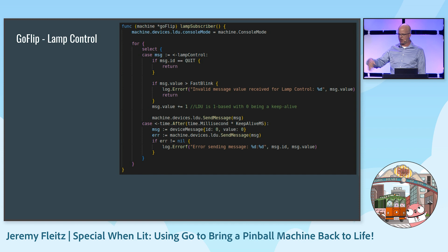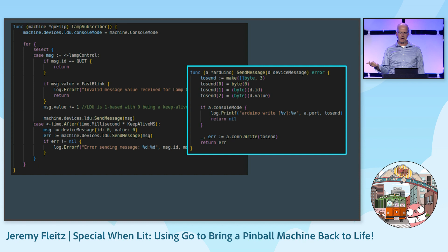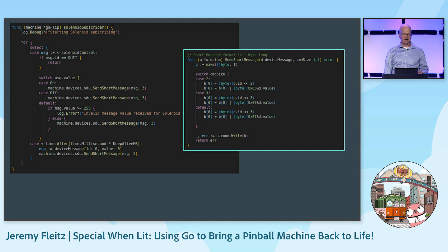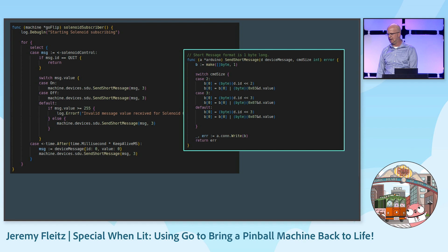The lamp control is pretty straightforward — it's a Go routine that's constantly running, looking for incoming messages, and sends them over to the Arduino via a three-byte array through the USB connection. The solenoid control is very similar. The difference is there's a send short message — just a one-byte message — so it can go a little faster. To get the device ID into the proper place, I'm doing a bitwise shift based on the command size, passing three in, shifting over three, then masking on the lower three bits with 0x07 ORed with the value — combining it all into that one-byte message.